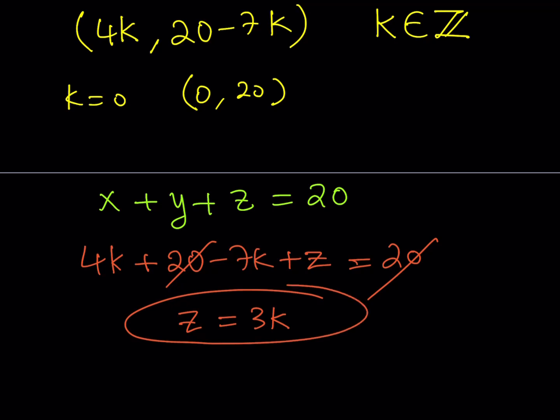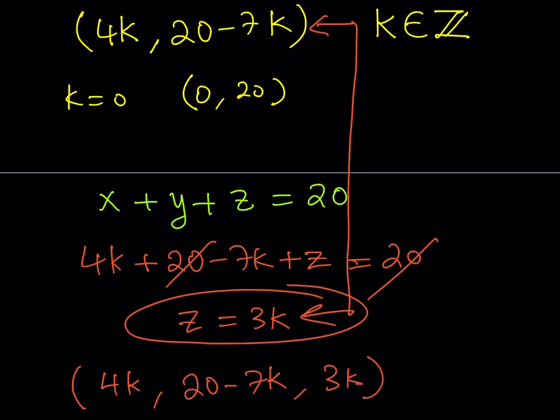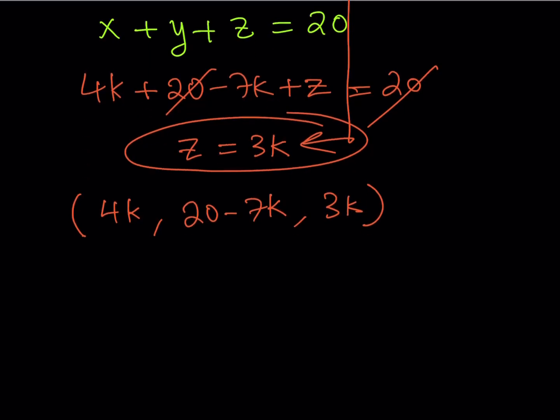Now I was able to get all the variables together. Let's write down the solution as an ordered triple. x would be 4k, y would be 20 minus 7k, and z would be 3k. Interesting, right? So x is always a multiple of 4, z is always a multiple of 3, and y is a little different. We're looking for positive integer solutions. This is the general solution where k is an integer, which generates infinitely many ordered triples.